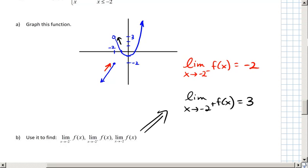As x approaches negative 2 from the left, the limit of f(x) is equal to negative 2. The limit as x approaches negative 2 from the right of f(x) is then equal to 3.